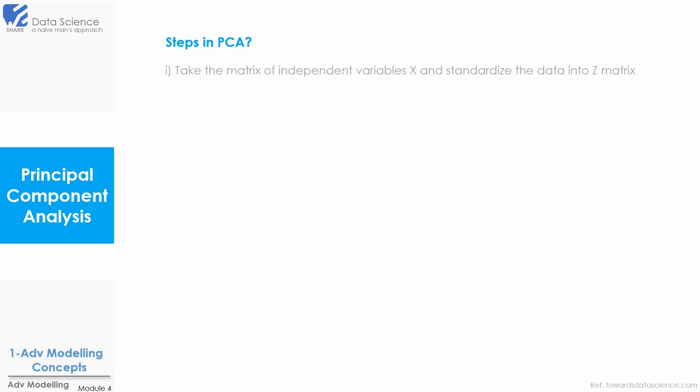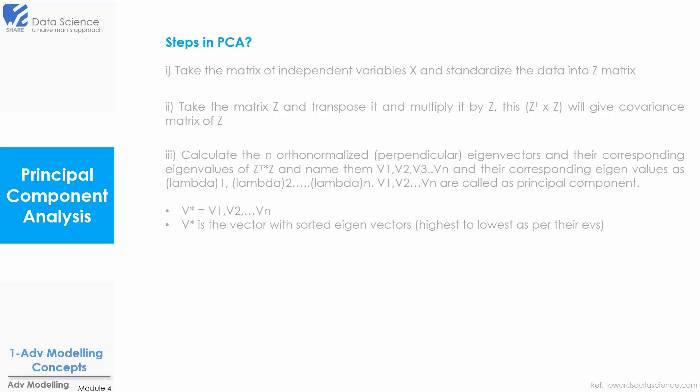The first step in PCA is to take the matrix of the independent variable X and standardize the data into Z matrix. Then take the matrix Z and transpose it and then multiply it by Z. This Z transpose multiplied by Z will give us the covariance matrix of Z. Now calculate the N orthonormalized eigenvectors and their corresponding eigenvalues of Z transpose multiplied by Z matrix which is basically the covariance matrix of Z.